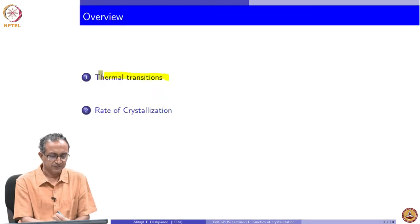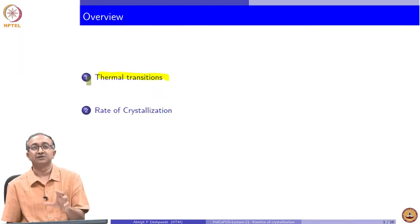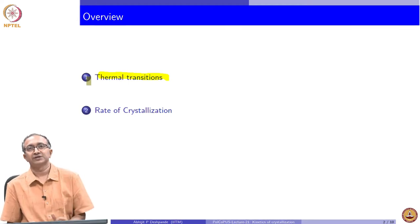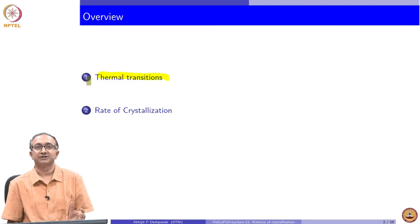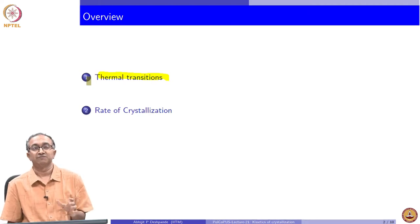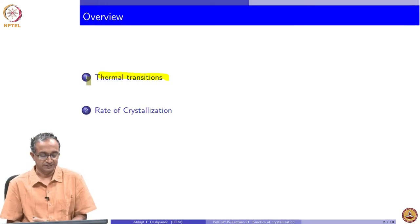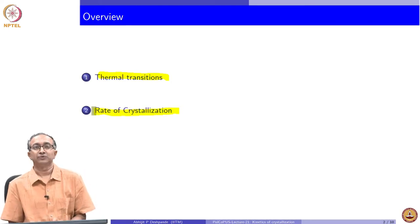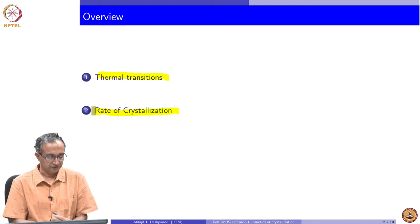We will do this by first looking at the relevant thermal transitions, because this will determine in part the rate of crystallization. The thermodynamic driving force — given that Gibbs free energy is lower for the crystalline state below a certain temperature — drives crystallization, but the other thermal transition related to molecular flexibility imposes restrictions. So we need to be aware of other thermal transitions before we look at the kinetics of crystallization, and once having done that, we will see the rate of crystallization.